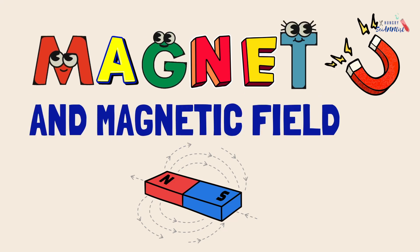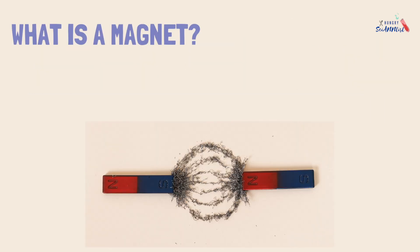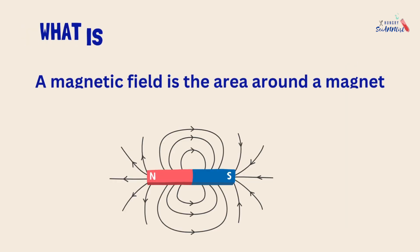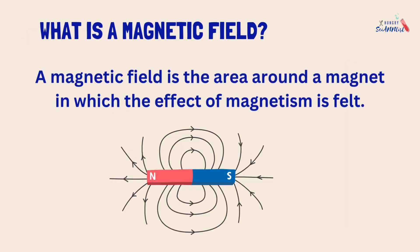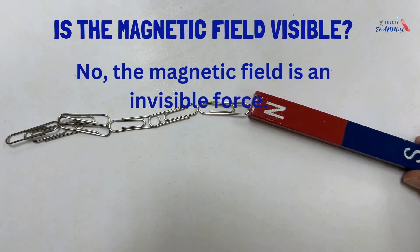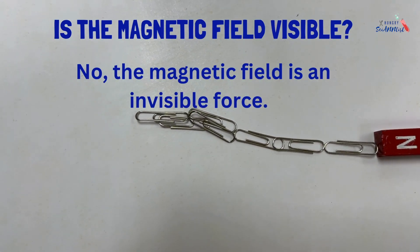What is a magnet? A magnet is a material or object that produces a magnetic field. What is a magnetic field? A magnetic field is the area around a magnet in which the effect of magnetism is felt. Is the magnetic field visible? No, the magnetic field is an invisible force.